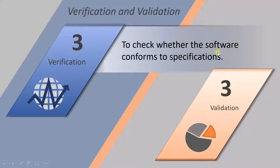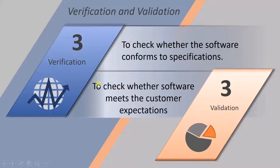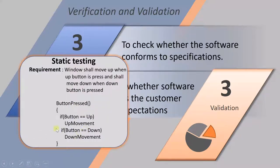The third point: verification is to check whether the software conforms to specification — we look at the software and confirm whether it is meeting the specification or not. In our example, we found a mistake by verifying the code against the requirement: for the down movement there was a condition missing, and that is how we found the mistake.